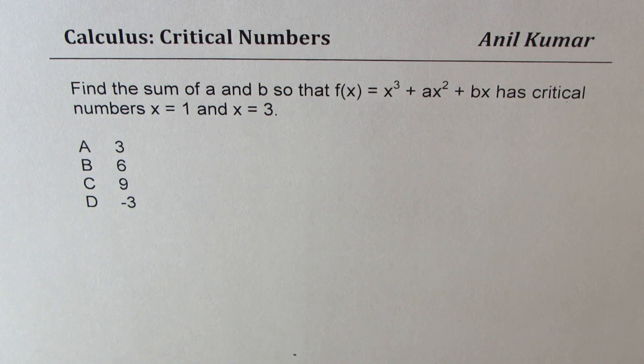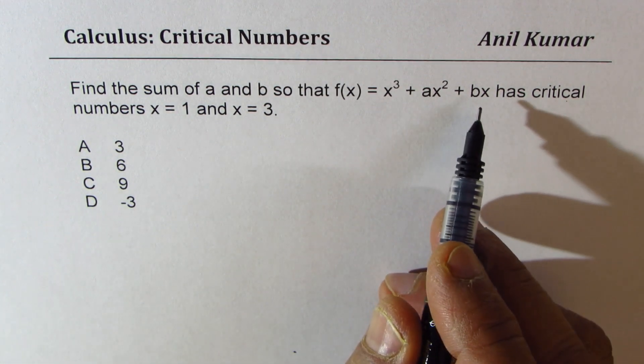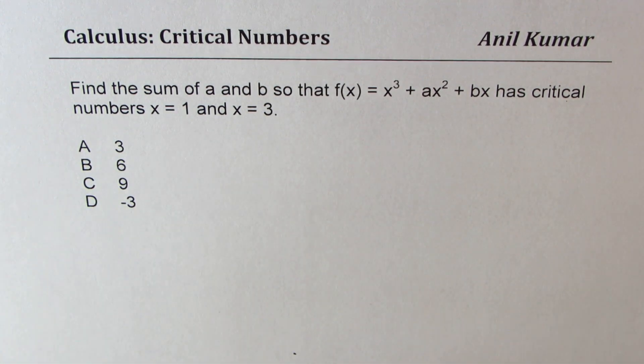The function has critical numbers x = 1 and x = 3. So a and b are unknowns we need to find, and their sum is one of these four options. Now when we say critical numbers are x = 1 and x = 3, what does that mean?